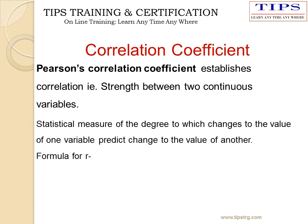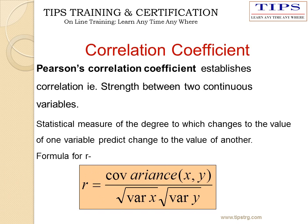Pearson's correlation coefficient establishes the correlation directly between two continuous variables. Statistically, we can say change in one variable predicts the change in another. The formula for the correlation coefficient is given here.